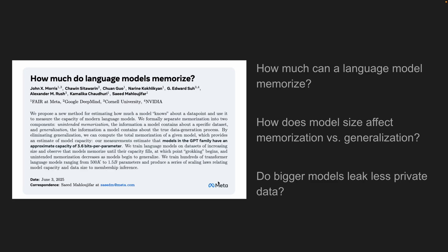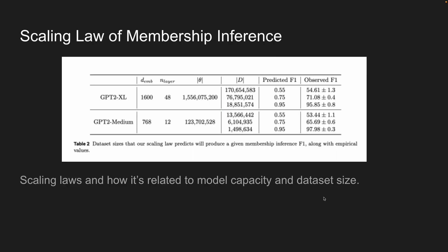Coming back to what this paper really captures: how much can a language model memorize? It can memorize around 3.6 bits per parameter — beyond that, it starts to learn general information from the dataset. How does model size affect memorization versus generalization? As more data is added, the model becomes more general, but the caveat is that more parameters allow it to learn more from data and generalize less. And do bigger models leak less private data? Yes, kind of, as seen from the predicted F1 scores.